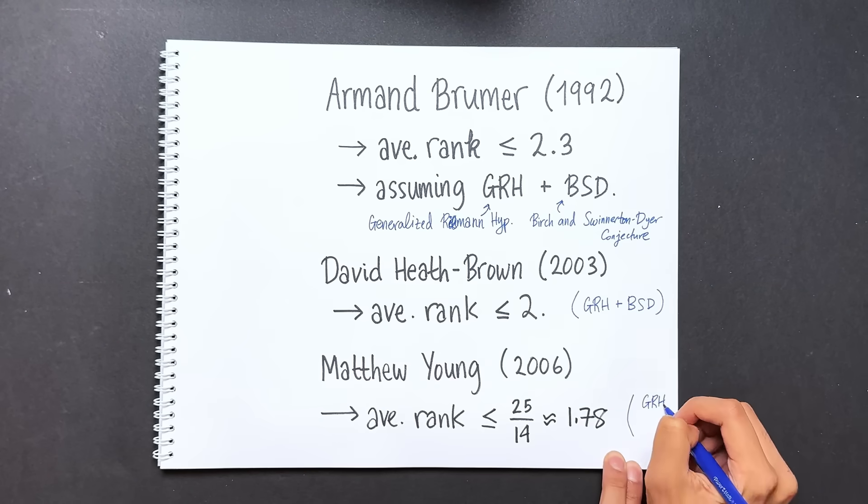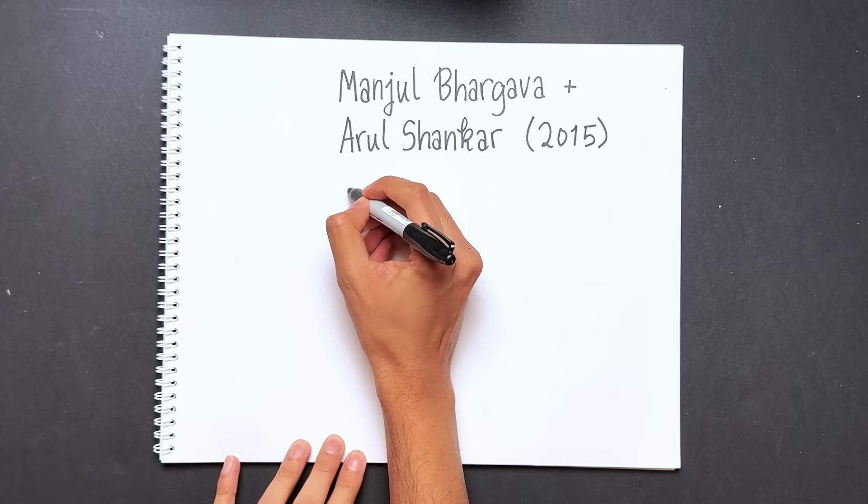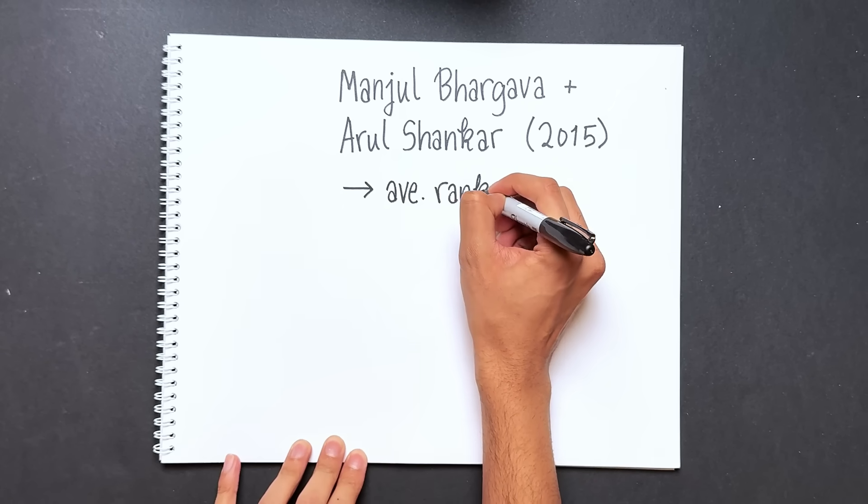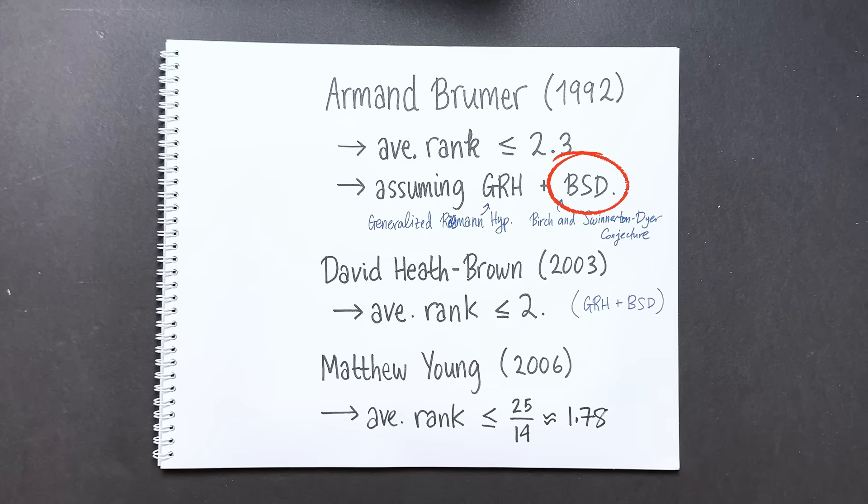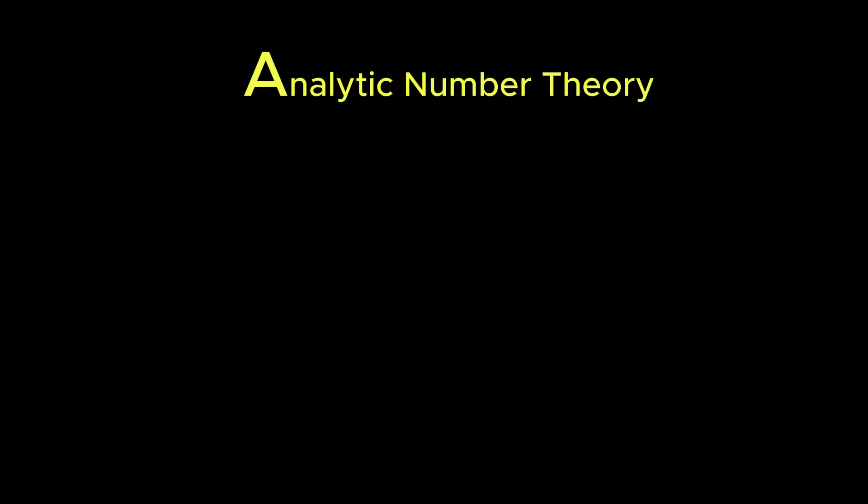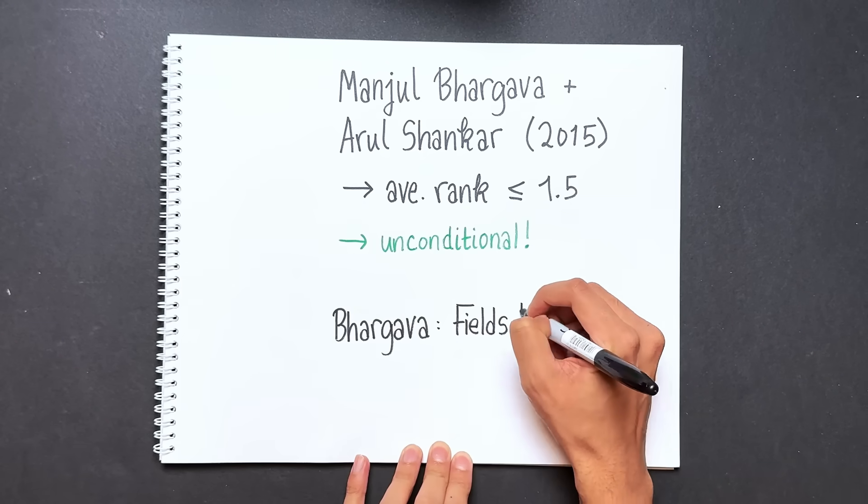But in 2015 everything changed. Manjul Bhargava and Arul Shankar showed that the average rank of elliptic curves is at most 1.15. This is great because it improved the record, but the major point is that they did it unconditionally - they didn't assume the Birch and Swinnerton-Dyer conjecture or the generalized Riemann hypothesis. How did they do this? The previous strategies used methods from analytic number theory, which meant they had to use GRH and BSD to get results about ranks. But Bhargava and Shankar used completely different strategies - their techniques were algebraic in nature from a field of math called arithmetic statistics. Because their techniques were algebraic, this allowed them to completely bypass using GRH and BSD. In part for this theorem, Manjul Bhargava was awarded the Fields Medal in 2014.